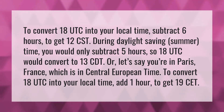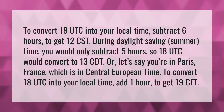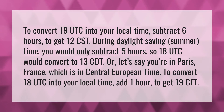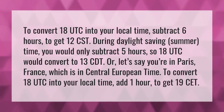During daylight saving summer time, you would only subtract five hours, so 18 UTC would convert to 13 CDT. Or, if you're in Paris, France, which is in Central European Time, add one hour to get 19 CET.